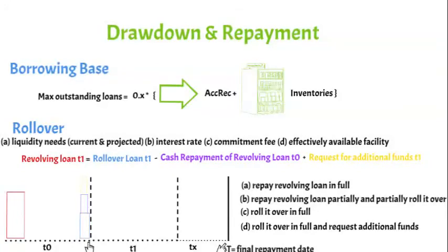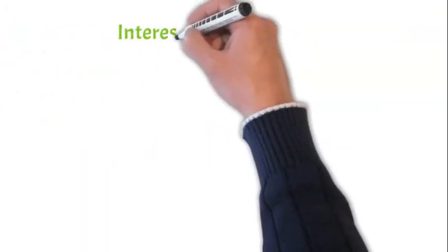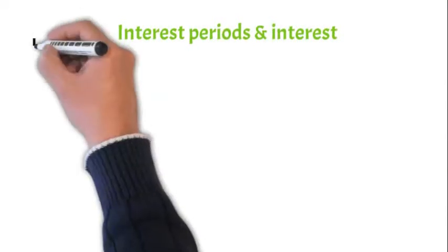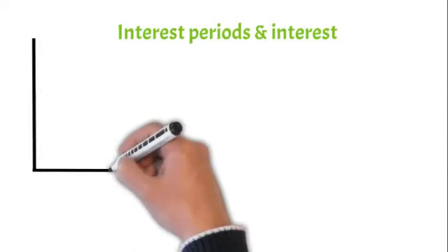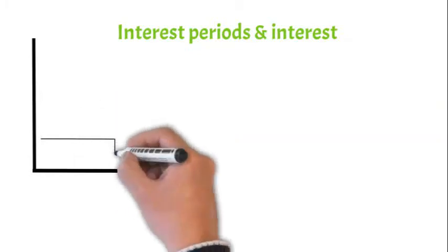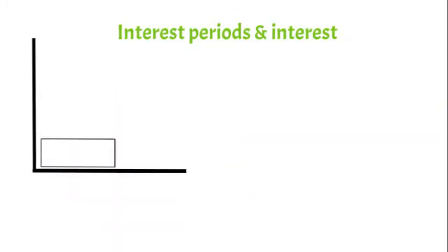As we discussed earlier, revolving facility only has one interest period. This implies that even if revolving facility is on floating interest rate, borrowers should not be exposed to interest rate risk. This is also the reason why revolving facility usually are not hedged against interest rate risk.